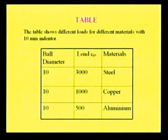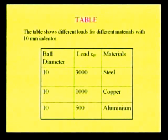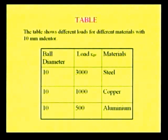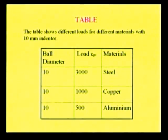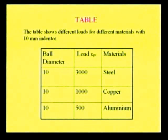A table shows the different loads for different materials using a 10 mm ball indenter. For steel, the maximum load that can be applied is 3000 kg; for copper it is 1000 kg; and for aluminum it is 500 kg. This means that depending upon the material properties, the load applied is also different.